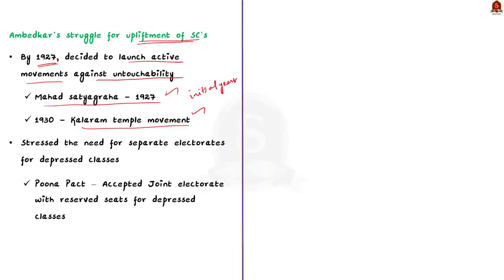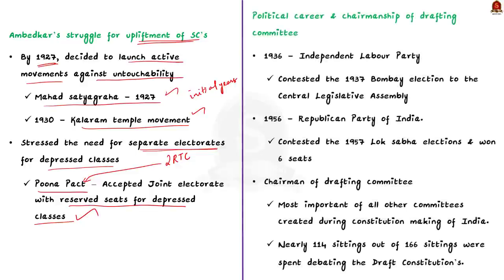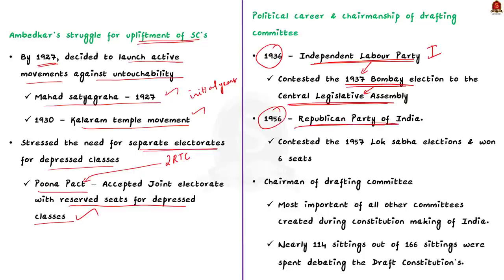After leading these two mass movements, Ambedkar tried to obtain representation for the scheduled classes in the legislative assemblies. He stressed the need for separate electorates for them in the second round table conference at London. This led to the famous Poona Pact between him and Gandhiji. In this pact, Ambedkar accepted joint electorates with reserved seats for scheduled classes in place of separate electorates. Coming to his political career, Ambedkar founded two political parties. In 1936, he founded the Independent Labour Party, which contested in the 1937 Bombay election to the Central Legislative Assembly. Then in 1956, he announced the establishment of the Republican Party of India, which won six seats in the 1957 Lok Sabha elections.